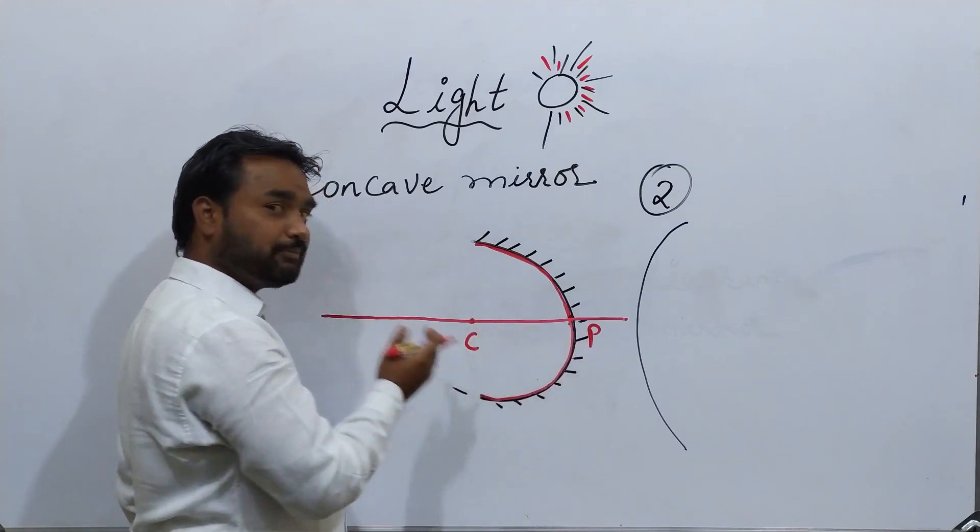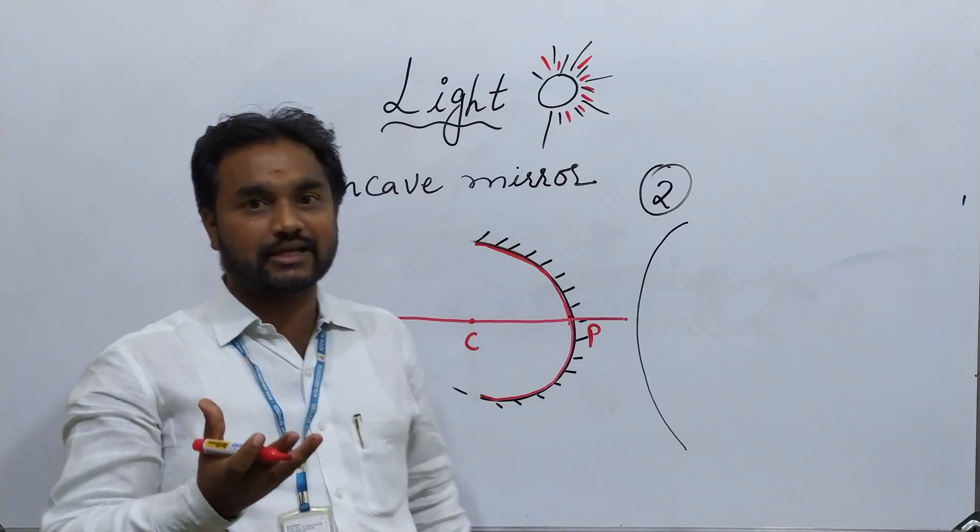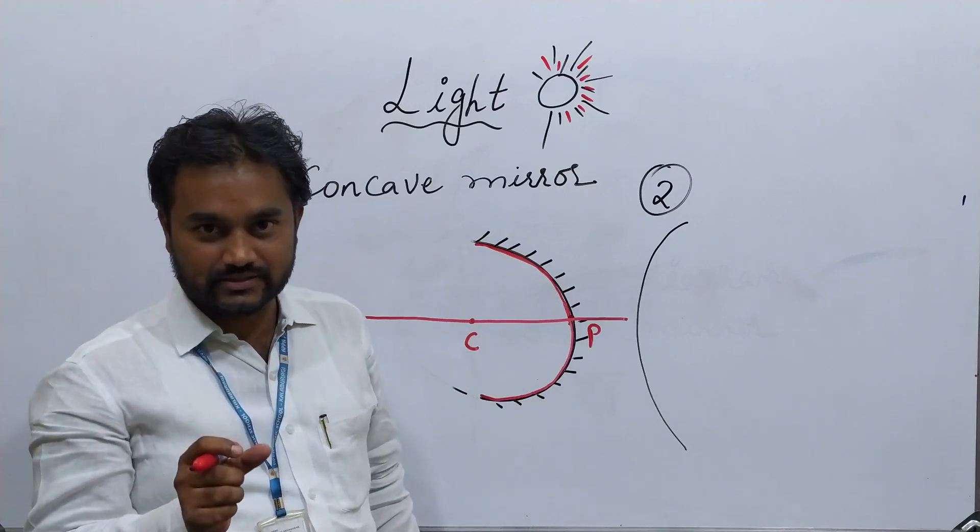Now comes, then what is the CP? What is this CP? CP from the center. So any circle that you take, from the center of that circle to the circumference, we call it as radius.